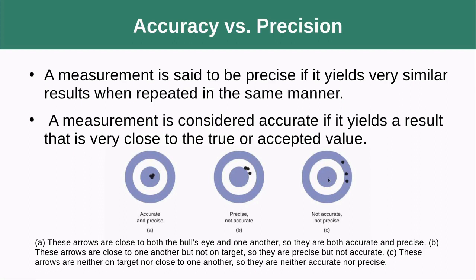So accuracy is how close we can get to an actual true accepted value that you may or may not know. And precision is how well you can repeat and get the exact same result when you make the exact same measurement over and over again.